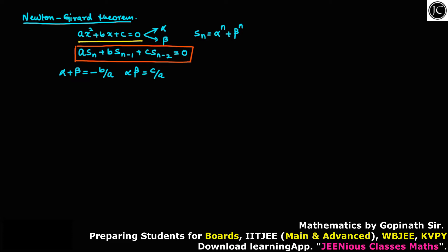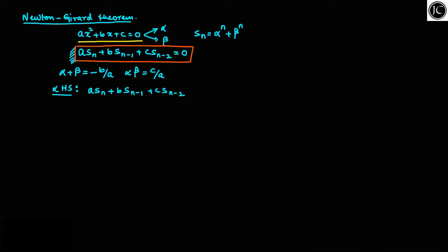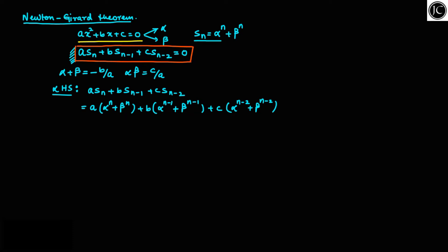Now let us take the left-hand side of what we have to prove: a·S_n + b·S_(n-1) + c·S_(n-2). I can write this as a·(alpha^n + beta^n) + b·(alpha^(n-1) + beta^(n-1)) + c·(alpha^(n-2) + beta^(n-2)), since S_n = alpha^n + beta^n, S_(n-1) = alpha^(n-1) + beta^(n-1), and S_(n-2) = alpha^(n-2) + beta^(n-2). That is exactly what I have replaced here.